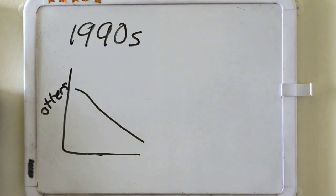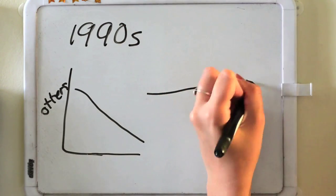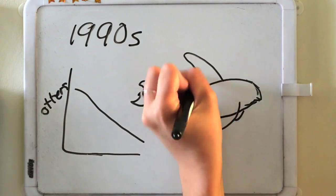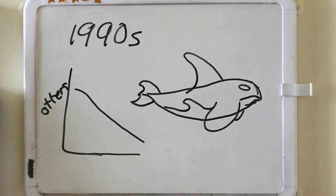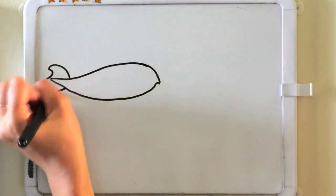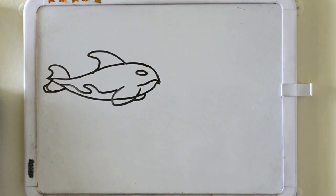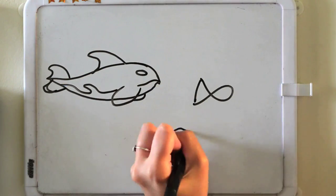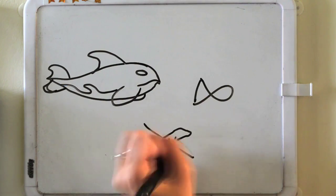However, in the 1990s, otters began to decline once again, but this time it was by predation by the orca, or killer whale. Researchers speculate that orcas started to prey on otters because their normal food sources have declined in recent years.